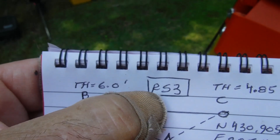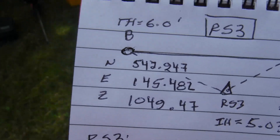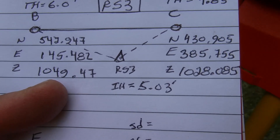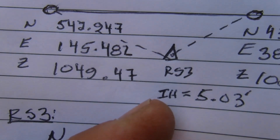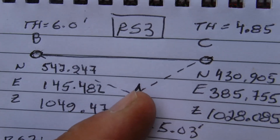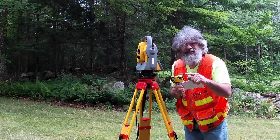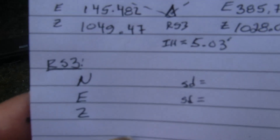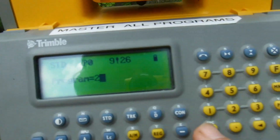We're going to establish the station over the occupied point and call it Reference Station 3, or RS3. We've already established the northing, easting, and elevation for each of those points, and we've measured the instrument height at RS3 as 5.03 feet. So we have all the information needed to establish that point through resection — that's basically maths. The way to do that is with Program 20.